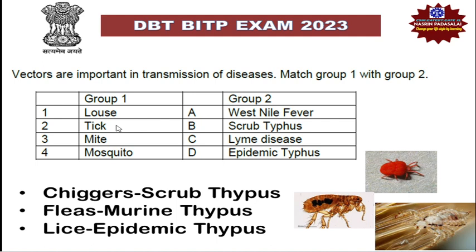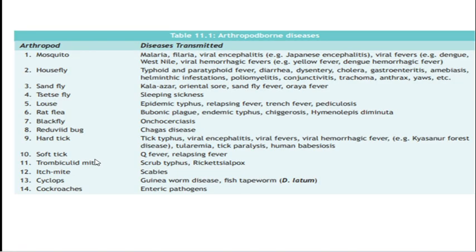Ticks are responsible for causing Lyme disease, acting as a vector. Mites are responsible for causing scrub typhus. Mosquitoes are responsible for causing various fevers. Mosquitoes act as a vector for transmitting malaria, filariasis, viral encephalitis like Japanese encephalitis, viral fevers like dengue and West Nile, and viral hemorrhagic fevers like yellow fever and dengue hemorrhagic fever.